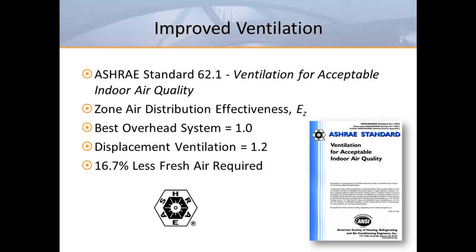Displacement ventilation is known to be a way to increase comfort through improved ventilation. The goal of any air distribution system should be to efficiently deliver ventilation air to the breathing zone. For this reason, ASHRAE Standard 62.1 rates various types of systems with regard to air change effectiveness. These ratings take into account the supply and return locations, as well as the discharge pattern and temperature. According to this standard, the very best overhead systems qualify for a rating of 1, and other lesser systems could be as low as 0.5. Displacement qualifies for the highest possible rating of 1.2, meaning it is thought to be 20% more effective than the best overhead system, and the minimum fresh air requirement can therefore be reduced by nearly 17%.